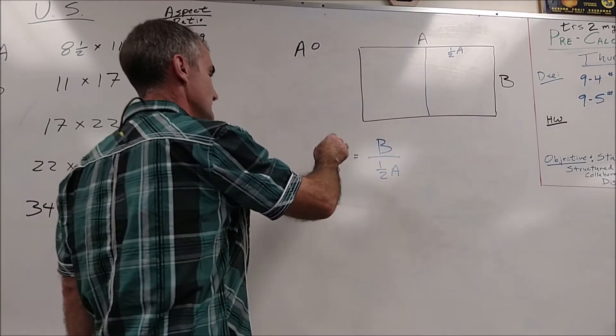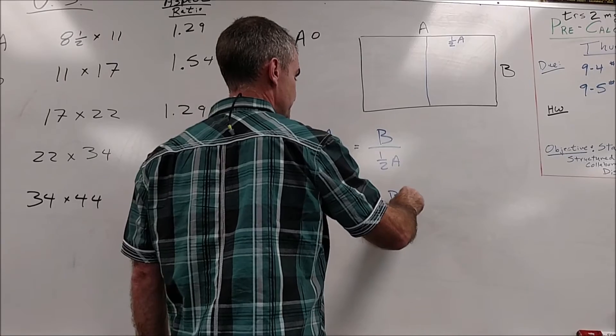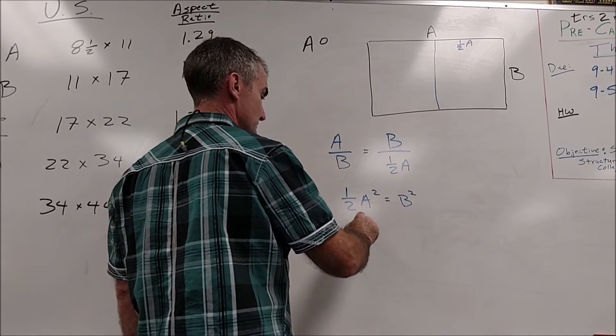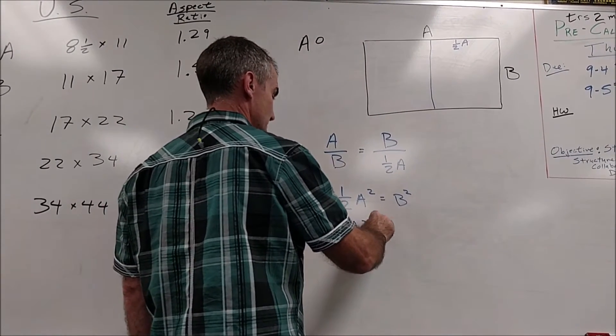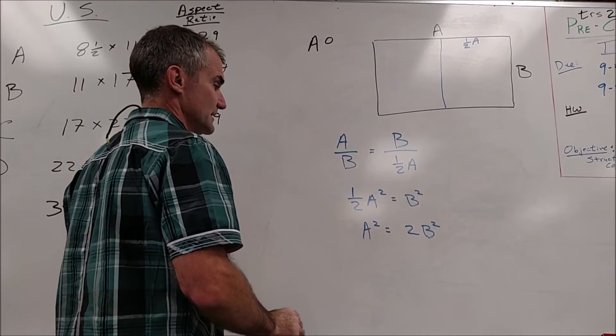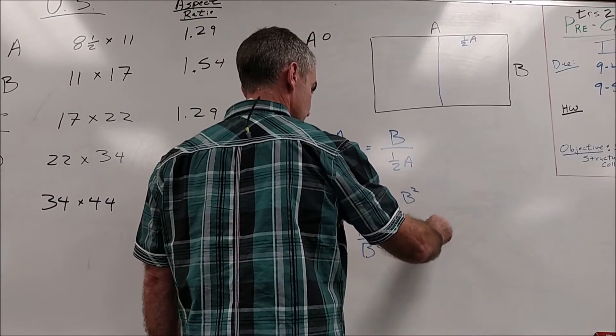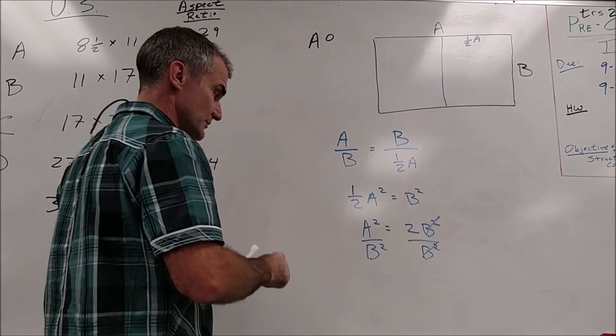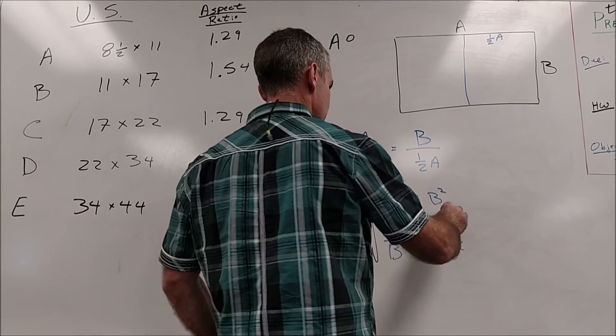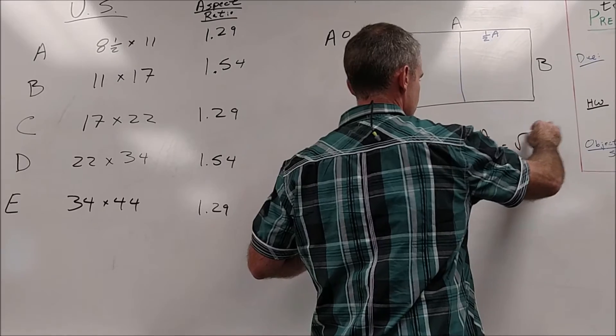So I set them equal to each other, I cross multiply to get one half A squared equals B squared. I multiply both sides by 2 to get A squared equals 2B squared. And then I divide both sides by B squared. So these are going to cancel out. And then I'm going to take square root of both sides. So if I take square root of both sides, I can see my ratio of A to B is equal to the square root of 2.